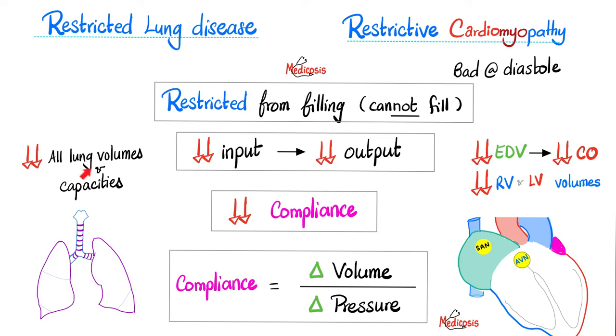Inspiratory reserve volume: low. Residual volume: low. Functional residual capacity: low. Everything is low. How about the heart? Less input, less output. What's the name of the input to the heart? The venous return — the preload.